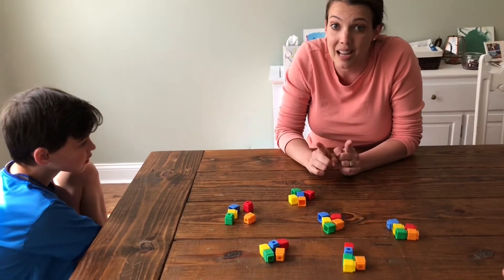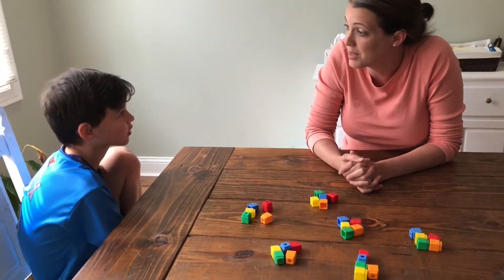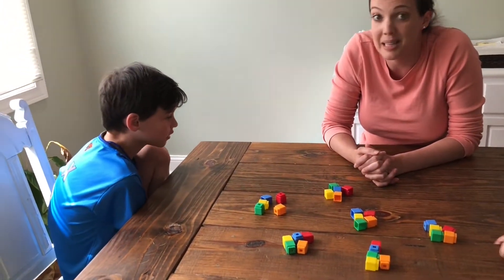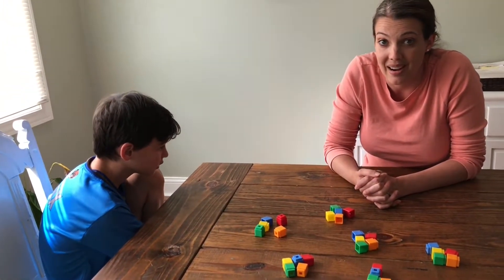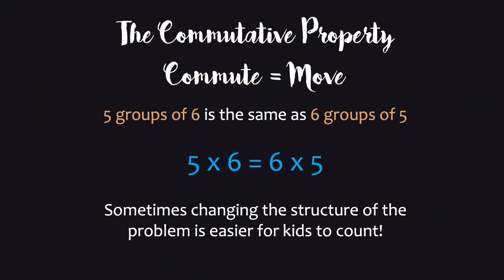I'm going to show you how this works not only with numbers but also with percentages. We just learned that the commutative property allows us to move our items in our groups — in other words, five groups of six can be rearranged into six groups of five, as we just did. Sometimes changing the structure of the problem makes it easier for kids to count when they're new with their multiplication facts.